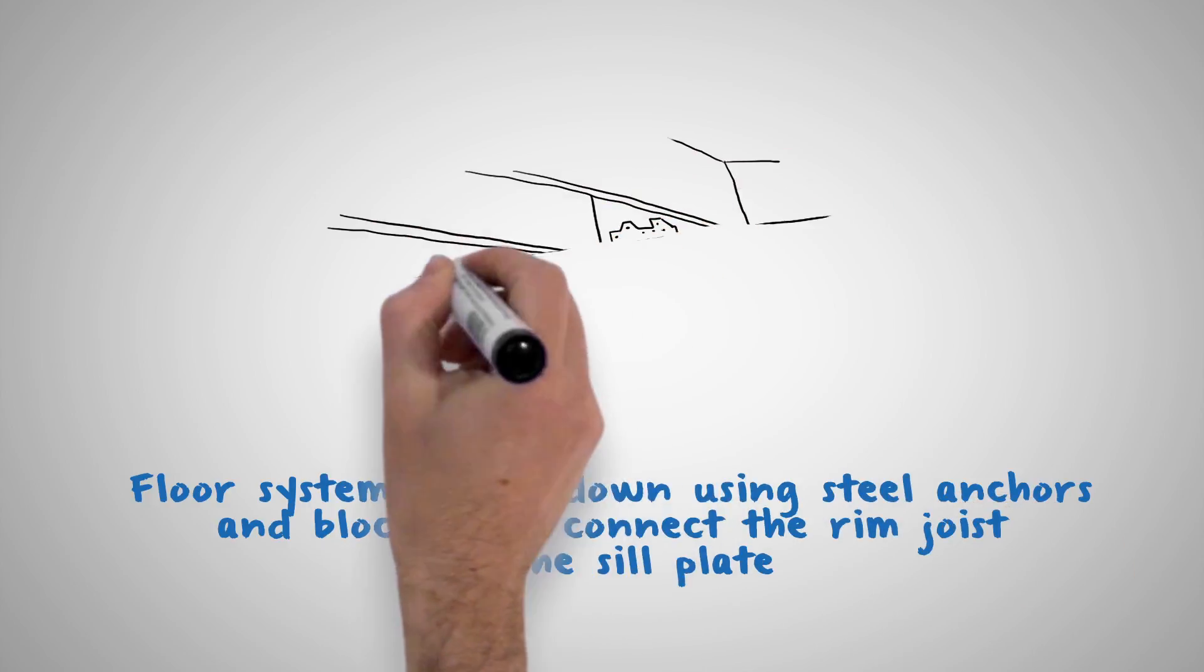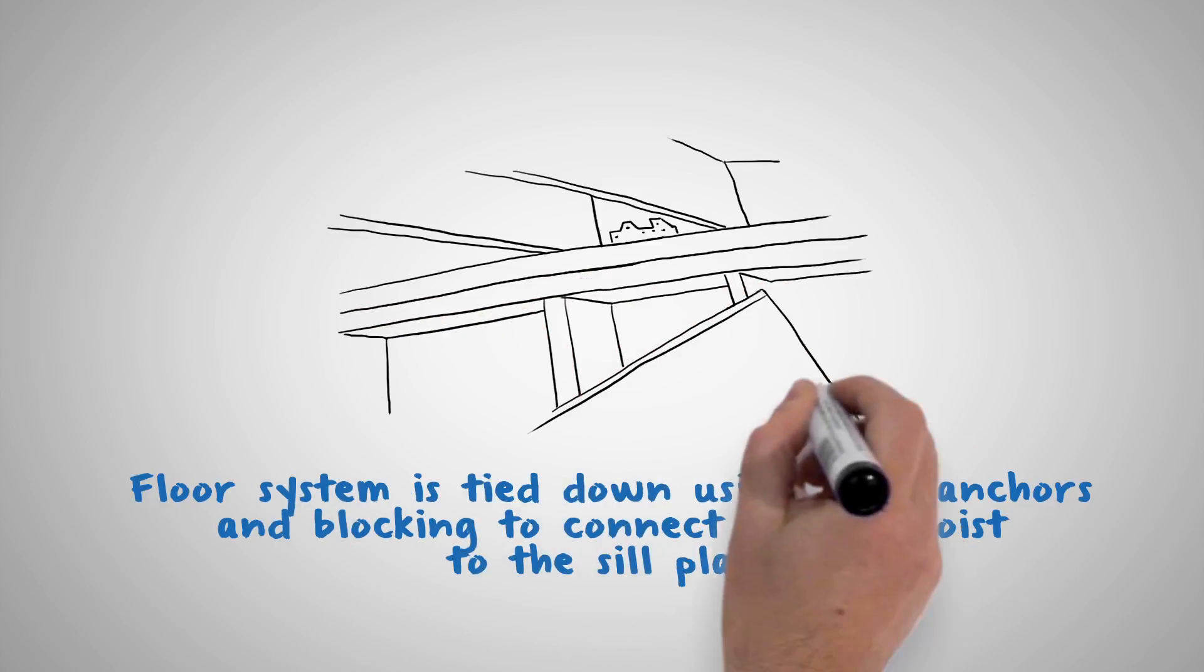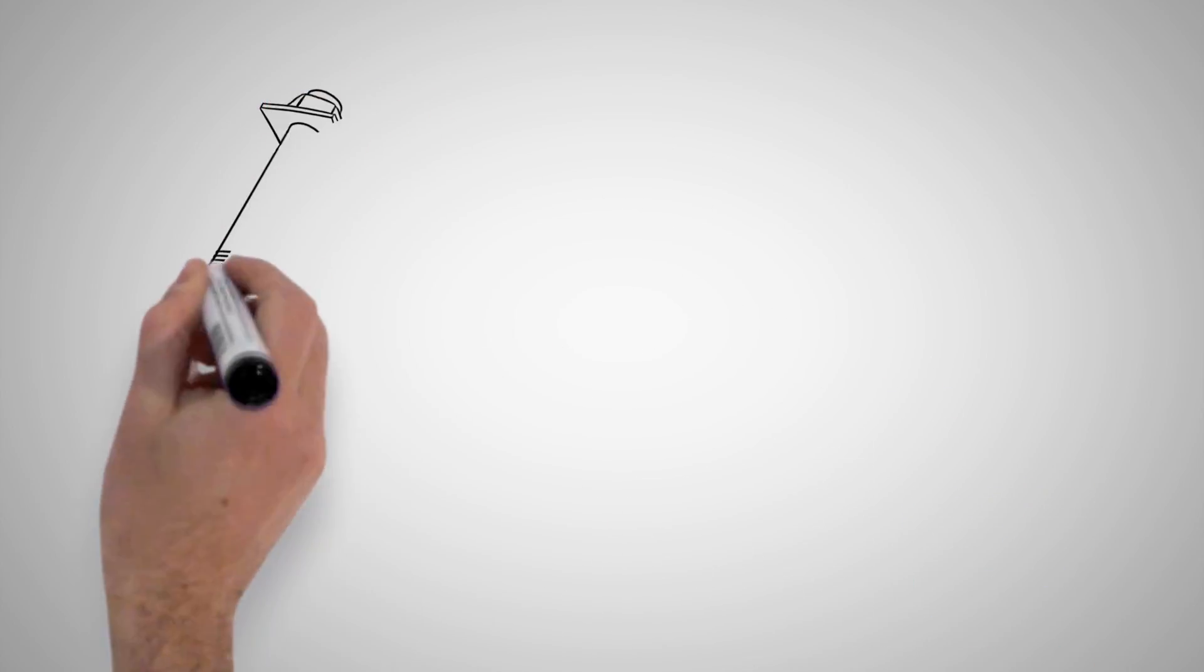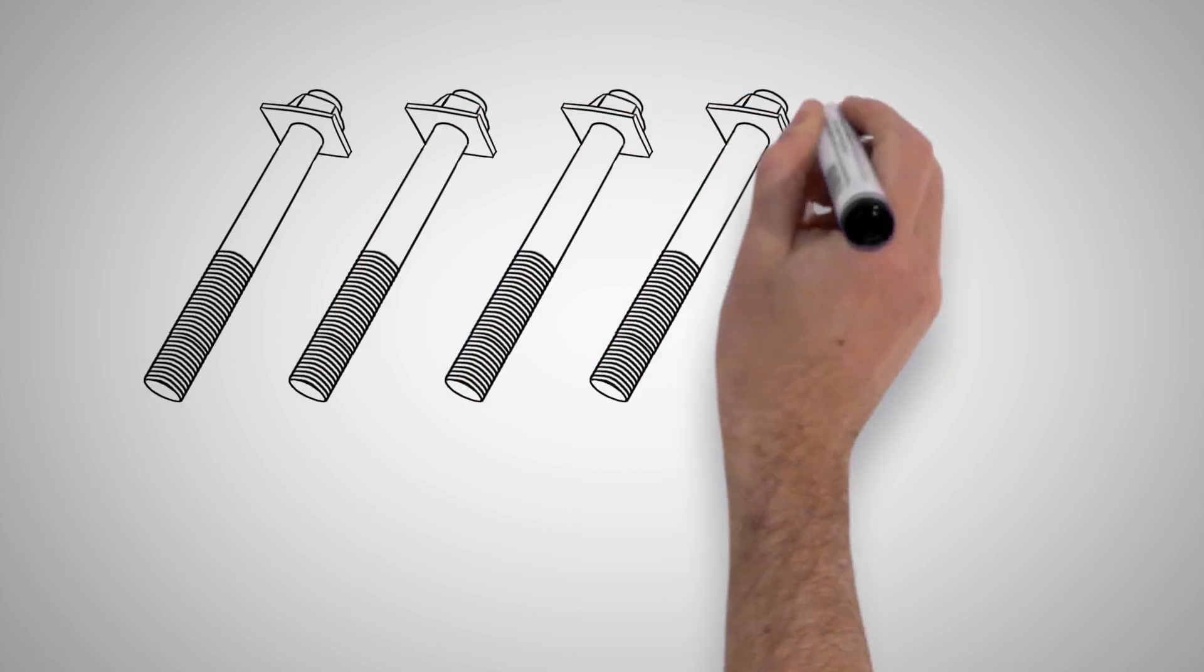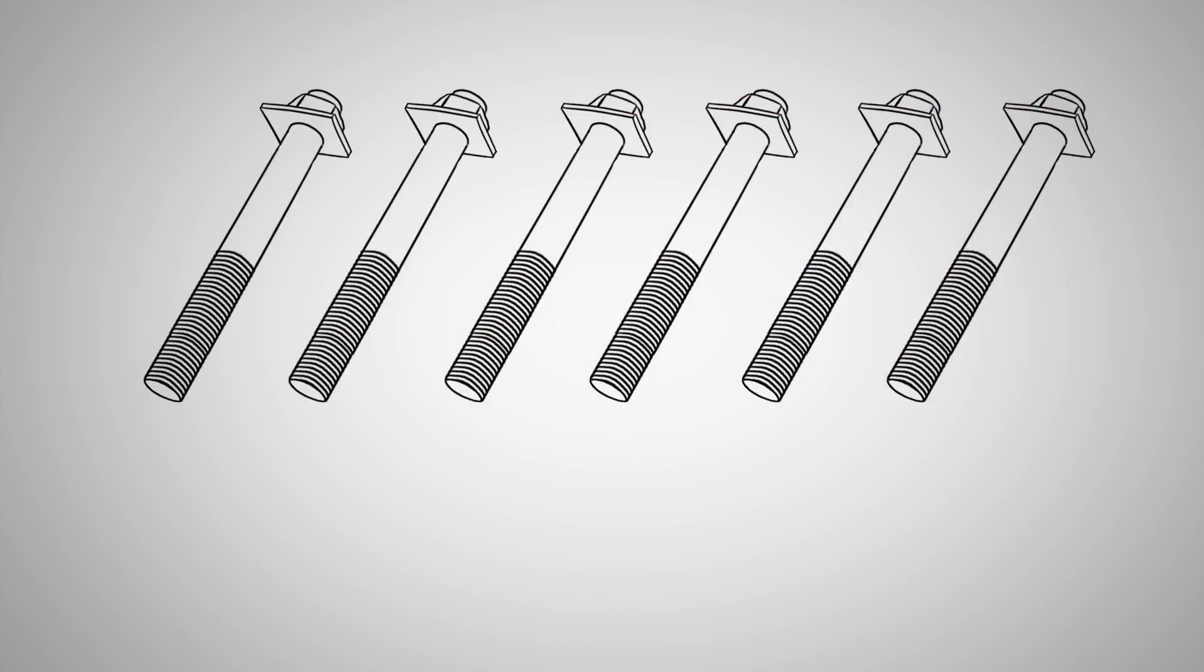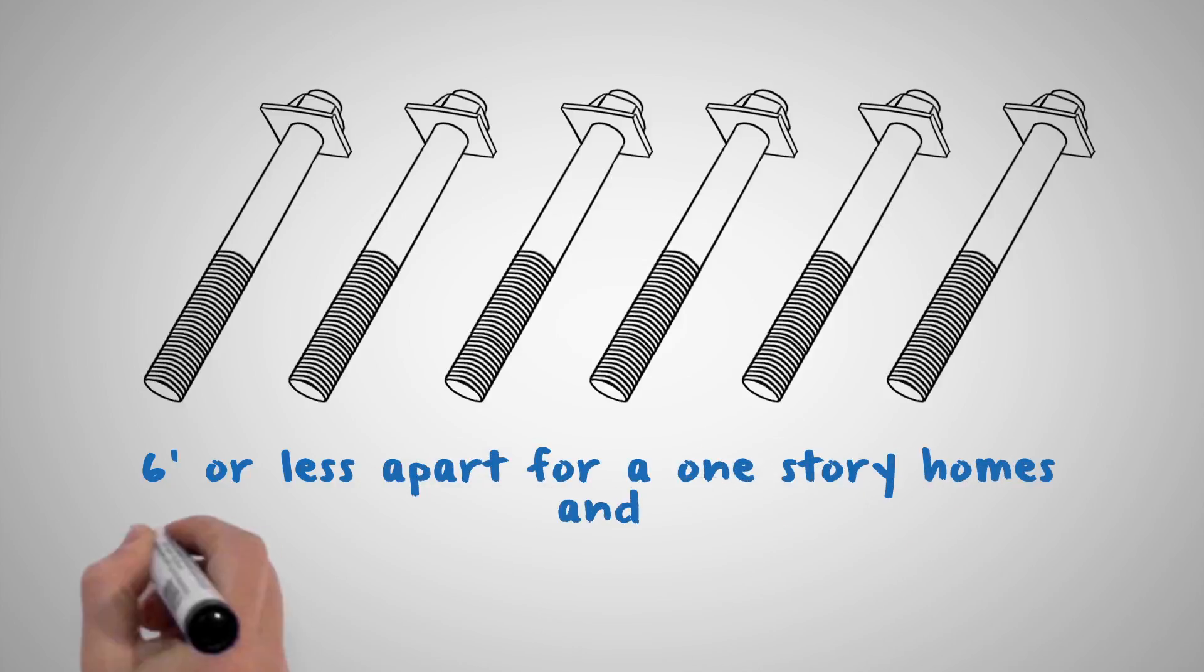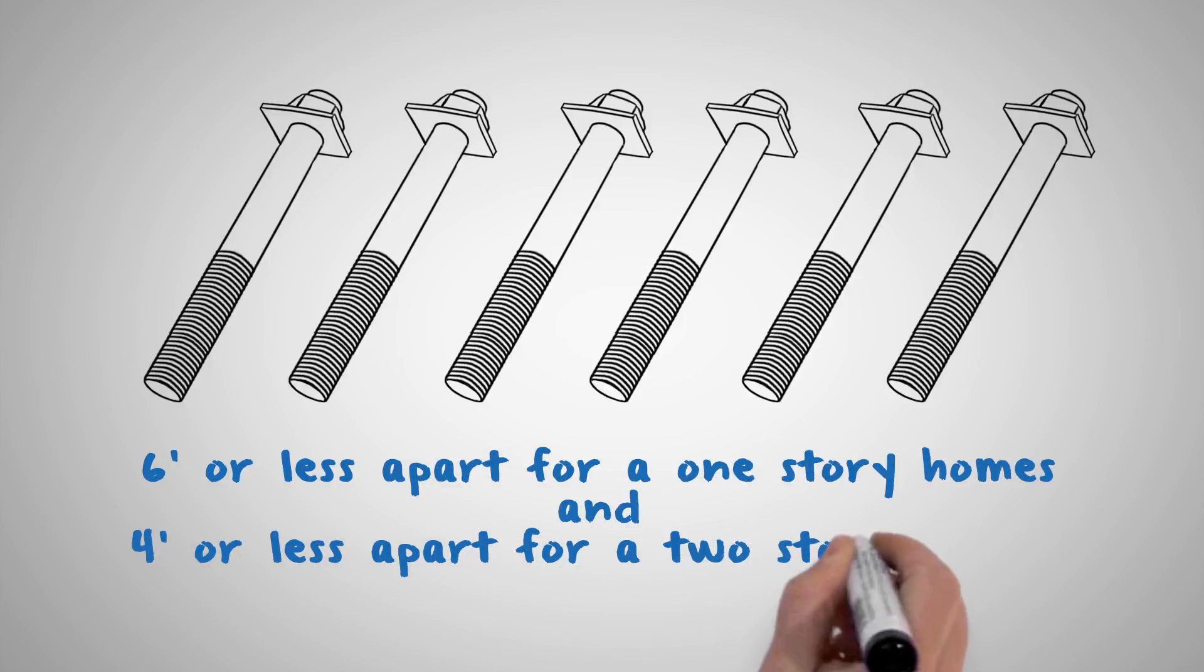Depending on whether a foundation has a wood-framed foundation or not, a choice of expansion wedge anchors and epoxy threaded rods is made. Typically, these bolts are spaced 6 feet or less apart for a one-story home and 4 feet or less apart for a two-story home.